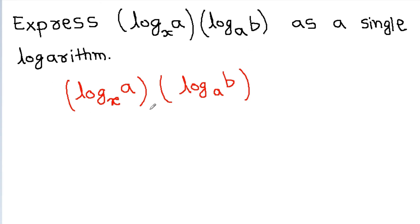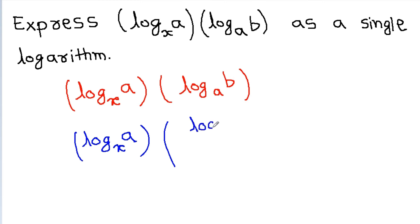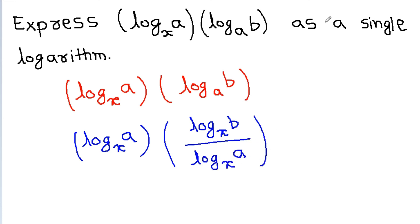We can write it as log_x(a) times log_a(b). Using the change of base formula, log_a(b) can be written as log_x(b) divided by log_x(a). The log_x(a) terms cancel, and we get log_x(b) — a single logarithm.